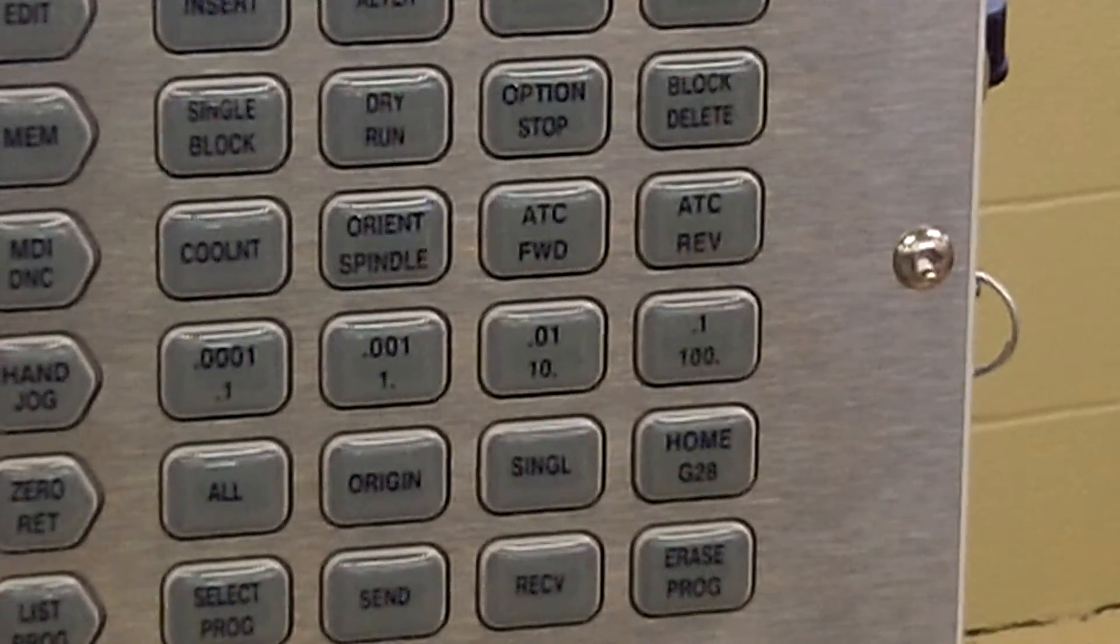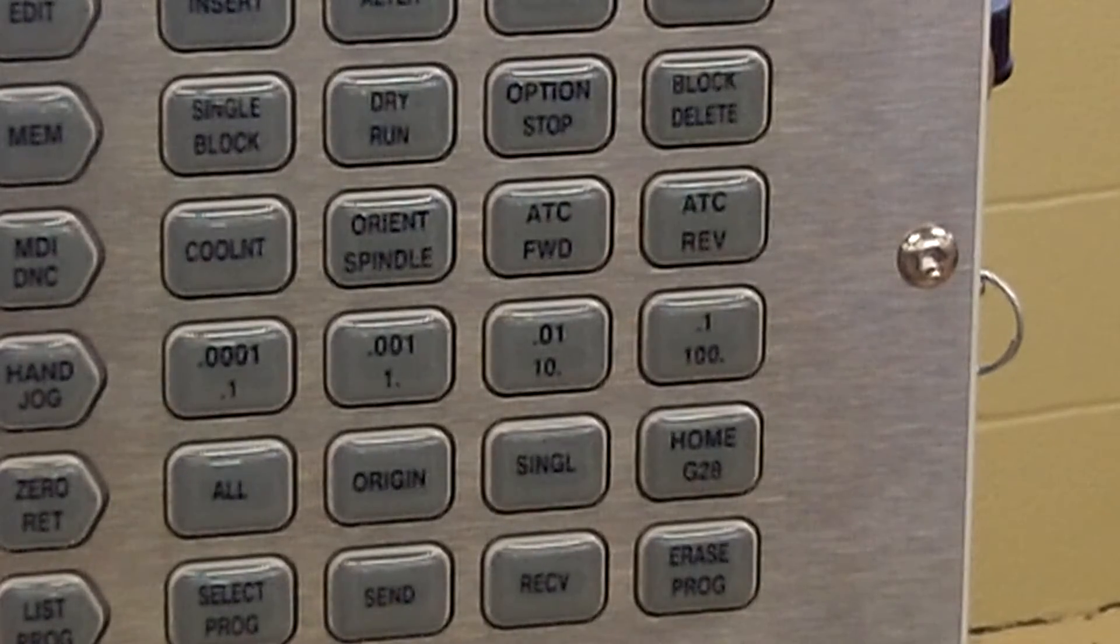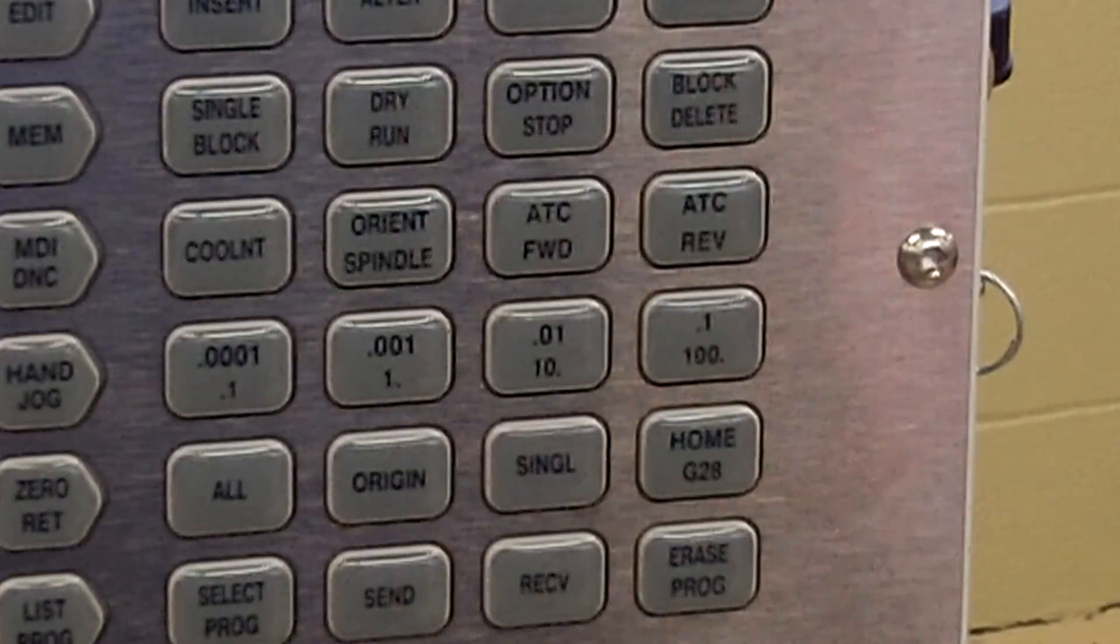And select the ATC forward. ATC stands for automatic tool changer. FWD is forward, ATC REV is reverse. We're going to go forward to the next tool.